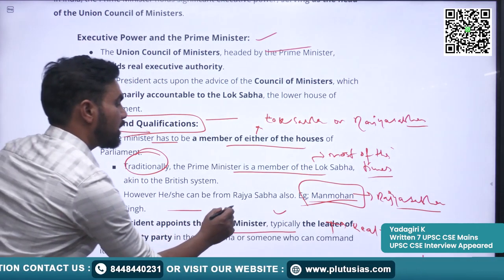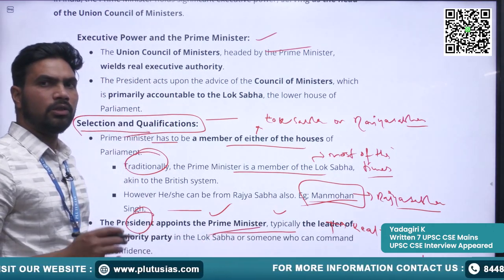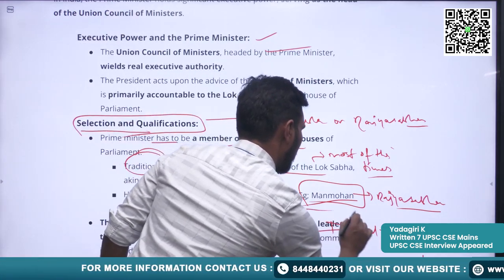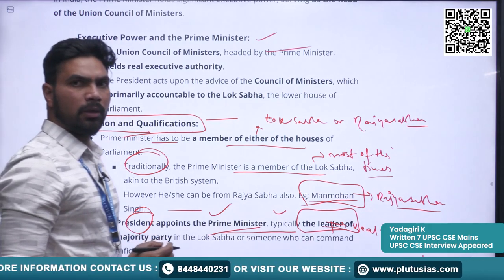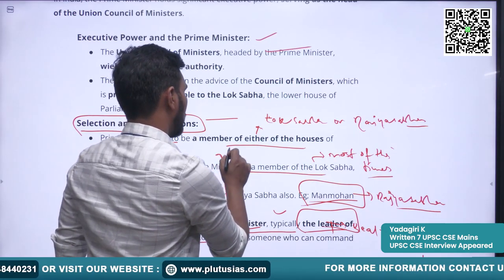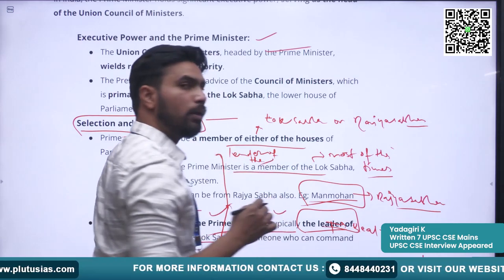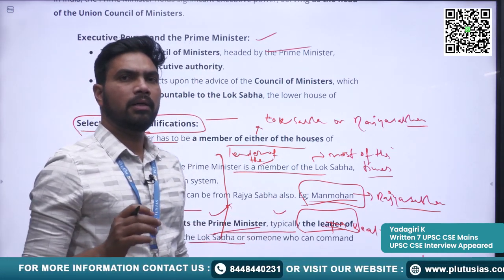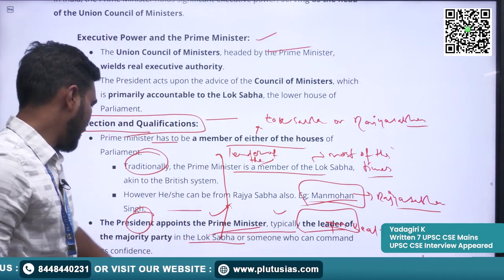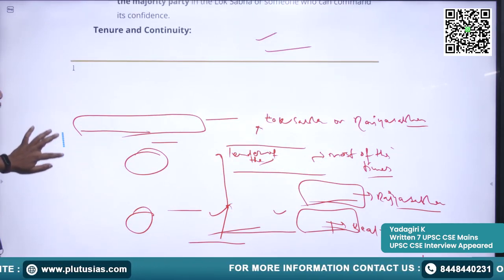When it comes to appointment, the President appoints the Prime Minister of India. The leader of the majority party in the Lok Sabha is appointed as the Prime Minister. So the leader of the ruling party in the Lok Sabha is the person who will be appointed as the Prime Minister of India.